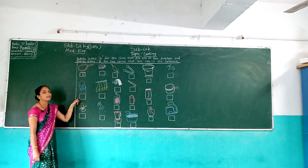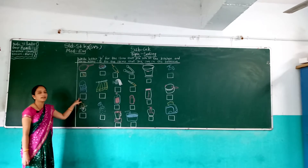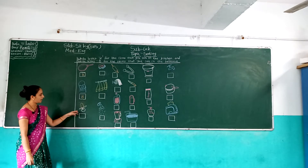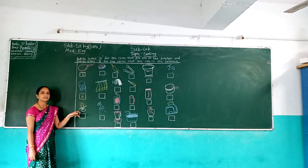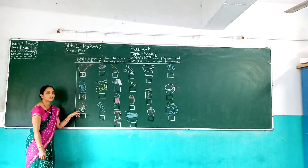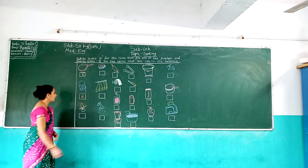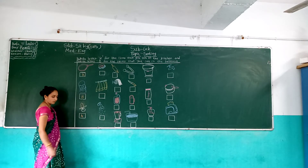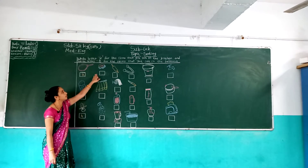Kitchen — तो हमें यहाँ कौनसा letter use करना है? B letter use करना है. Okay, so right here B. And next, which picture is this? Cutter. Which picture is this? Cutter — cutter हम कहाँ use करते हैं? Kitchen में — kitchen item में हमें कौनसा letter use करना है? K. So right here K.